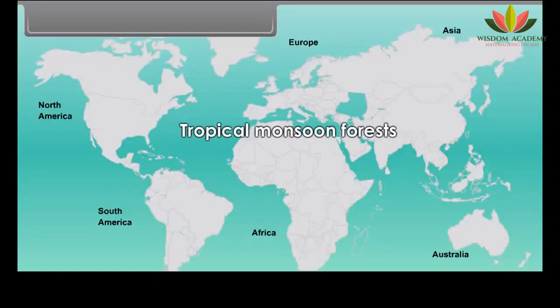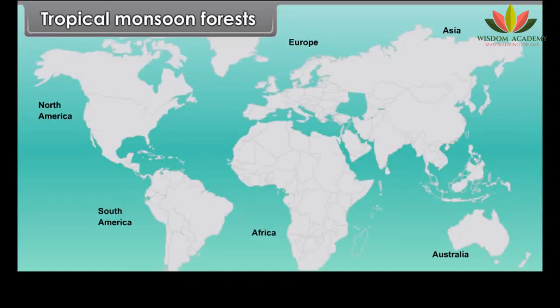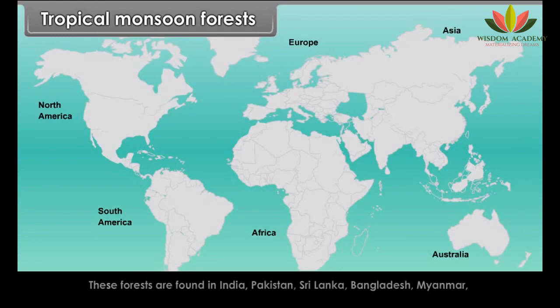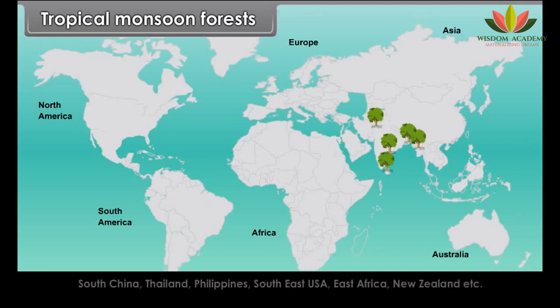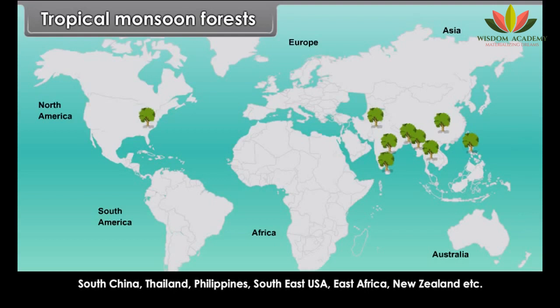Tropical Monsoon Forests are found in India, Pakistan, Sri Lanka, Bangladesh, Myanmar, South China, Thailand, the Philippines, Southeast USA, East Africa and New Zealand.